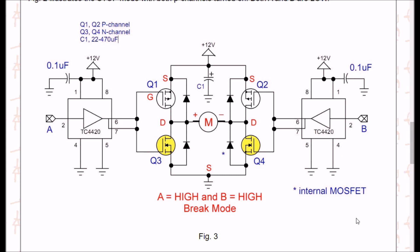Alright, here we have A high and B high. It's going to switch on both N-channel MOSFETs, Q3 and Q4, switching both sides of the motor to ground. This is known as the brake mode.